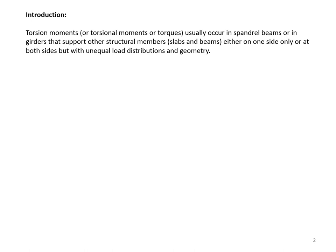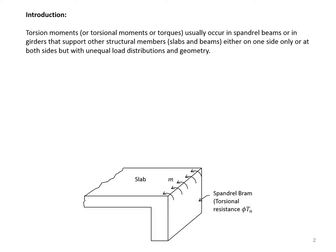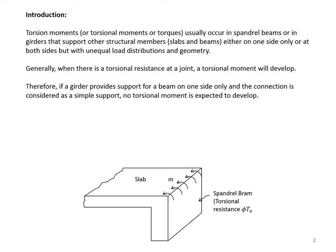Torsion moments usually occur in spandrel beams or in girders that support other structural members, such as slabs and beams, either on one side or at both sides but with unequal load distribution and geometry. Generally, when there is a torsional resistance at the joint, a torsional moment will develop. Therefore, if a girder provides support for a beam on one side only and the connection is considered as a single support, no torsional moment is expected to develop.